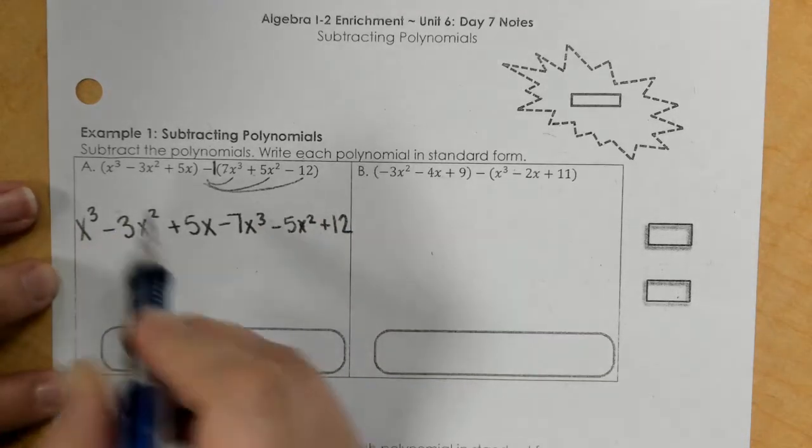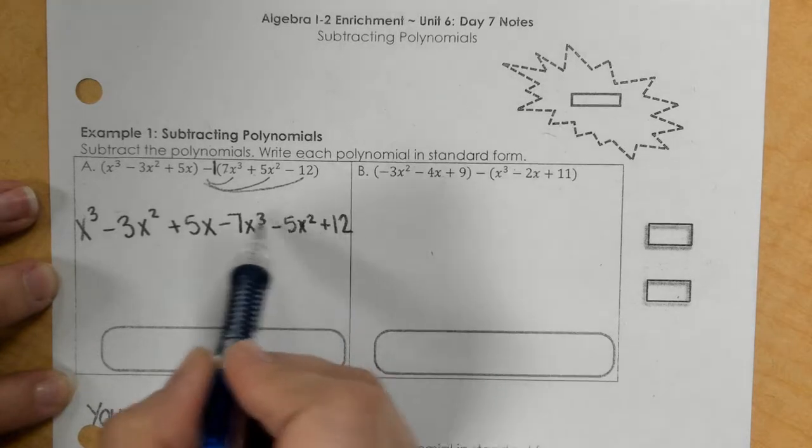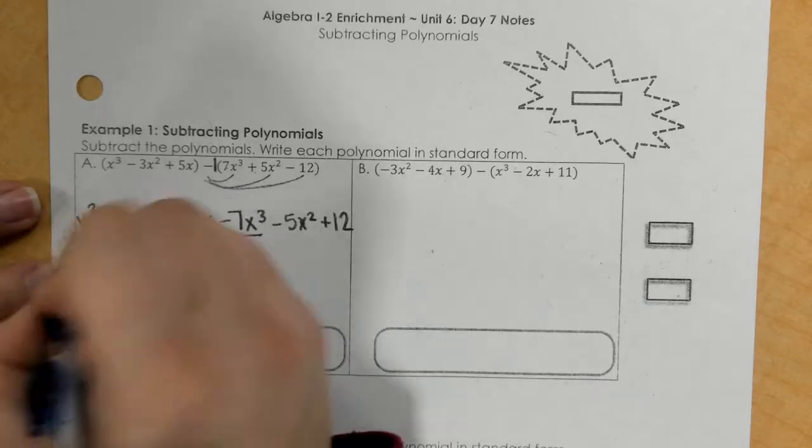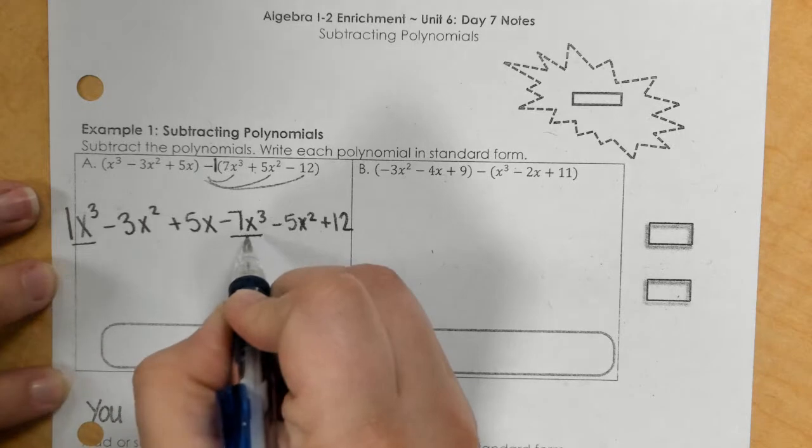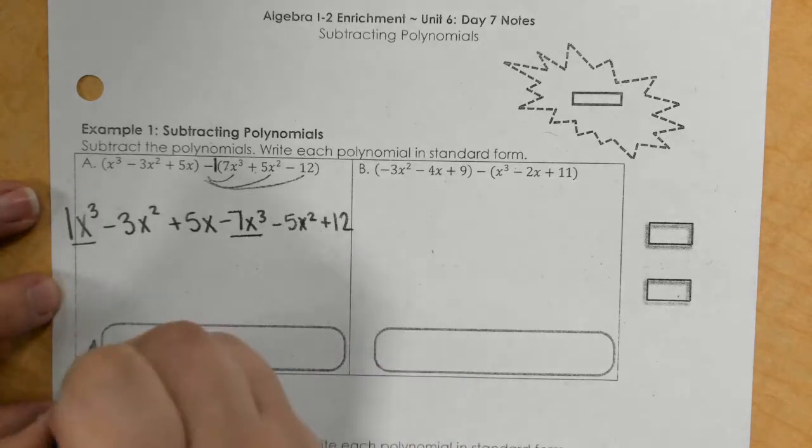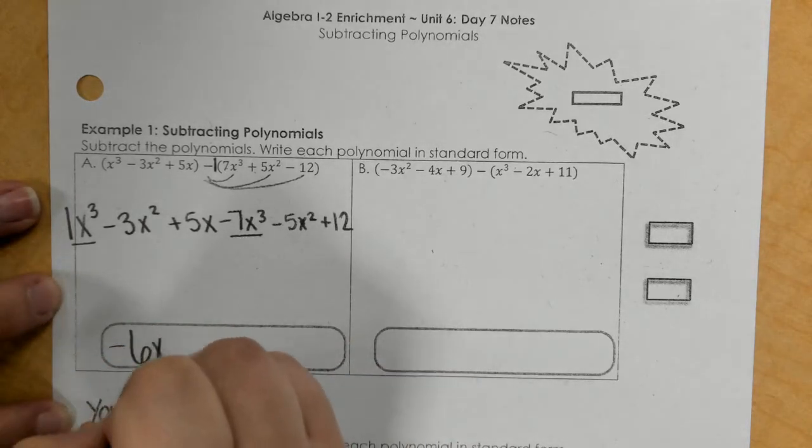And then we would go through and go, okay, what's the biggest exponent we have? It looks like a 3. So 1x to the third minus 7x to the third is negative 6x to the third.